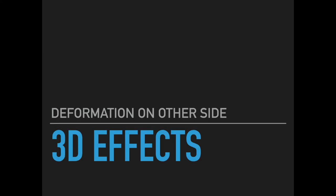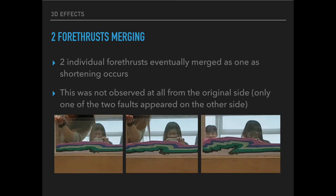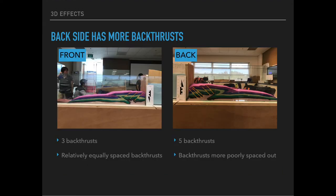3D effects. An interesting feature of the other side is that two of the four thrusts gradually increased in their dip angles as the shortening increased. In contrast, the original side only had one of these four thrusts and no merging of faults was observed. In addition, this side has more back thrusts — the original side has three back thrusts spaced relatively equally, while the back side of the sandbox has five back thrusts that are more poorly spaced out.